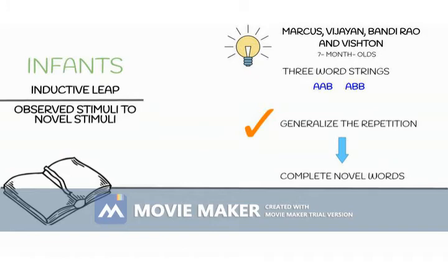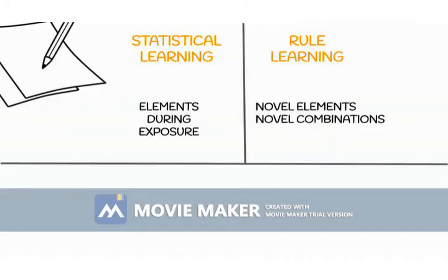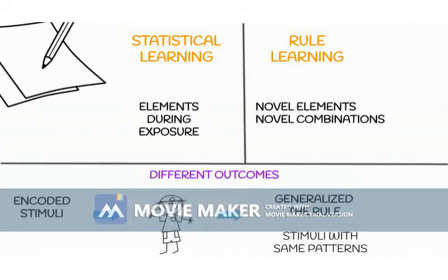Marcus, Vijayan, Bandi Rao, and Vishton showed that seven-month-olds who listened to three-word strings with a repeated word in either the two first or the two last positions were able to generalize the repetition to completely novel words. Some researchers have claimed that statistical learning and rule learning are two separate mechanisms, because statistical learning involves learning about elements that have been presented during exposure, whereas rule learning can be applied to novel elements and novel combinations. But an alternative hypothesis is that these two processes are in fact not distinct, but rather are different outcomes of the same learning mechanism.